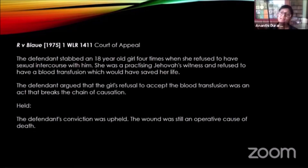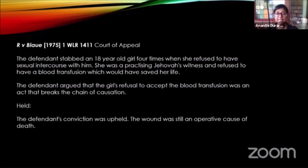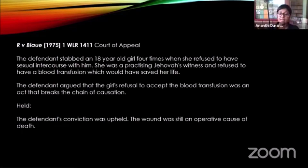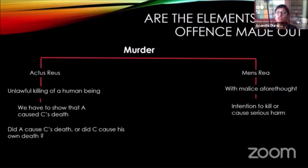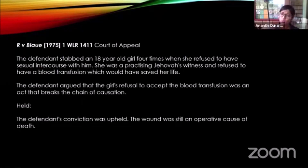If C hadn't been taken to the hospital, would he have died? Yes. So what caused the death? It was A's act of stabbing C. From that we can see that the act of A stabbing C is the cause of C's death. So is the actus reus element satisfied? Yes. Earlier we said the mens rea wasn't a problem — an intention to cause grievous bodily harm at the very least. The only issue was whether A's act caused C's death, and looking at R v Blaue, the chain of causation is also satisfied.